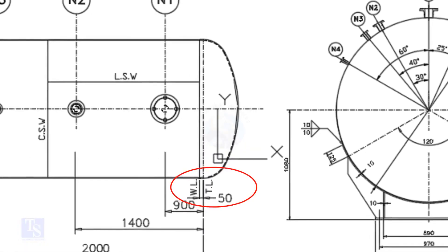What is TL and WL? TL stands for Tan Line and WL stands for Weld Line. The surface between the TL and the WL is called SF or Straight Face. Here, the straight face is 50mm.